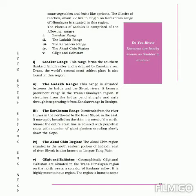This range forms the southern flanks of Sindh Valley and is drained by Zanskar River. The world's second most coldest place is also found in this region. This range is situated between the Indus and the Shiok rivers.